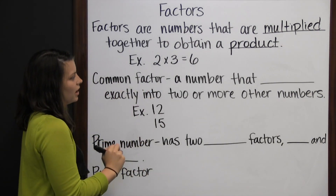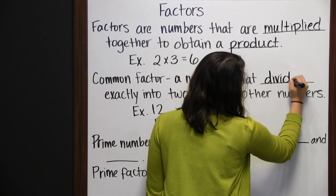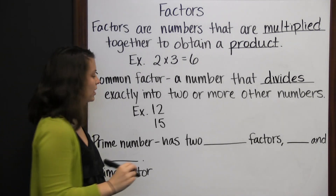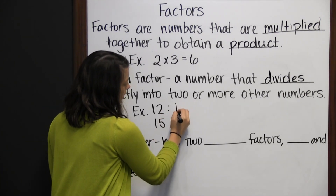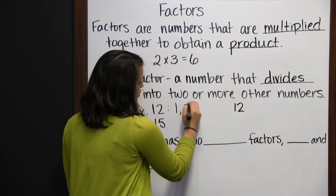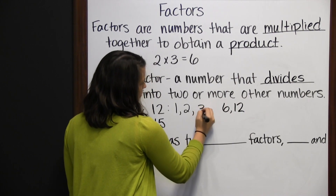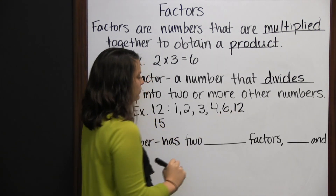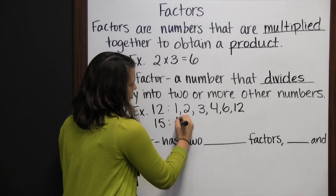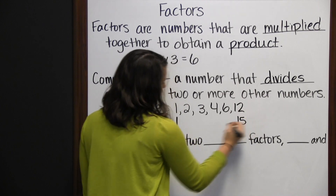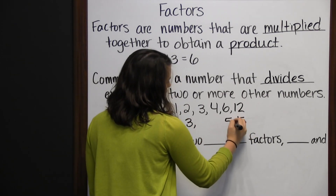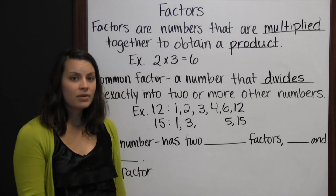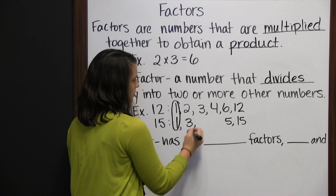A common factor is a number that divides exactly into 2 or more other numbers. For example, the factors of 12 are 1 times 12, 2 times 6, and 3 times 4. So the factors of 12 are 1, 2, 3, 4, 6, and 12. The factors of 15 are 1 times 15 and 3 times 5. So the factors of 15 are 1, 3, 5, and 15. The common factors are 1 and 3 — those are the factors they have in common.